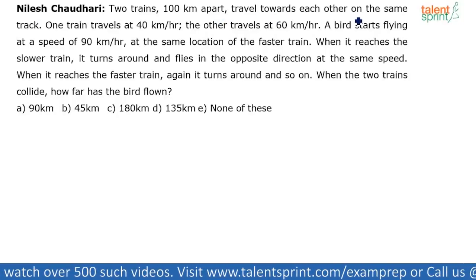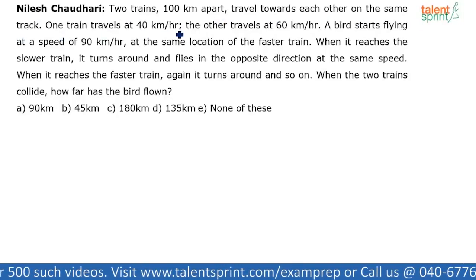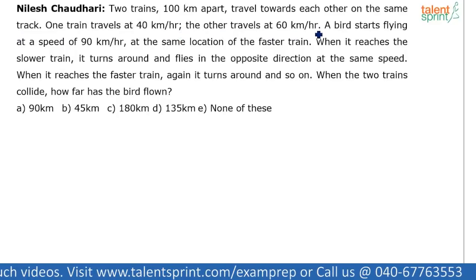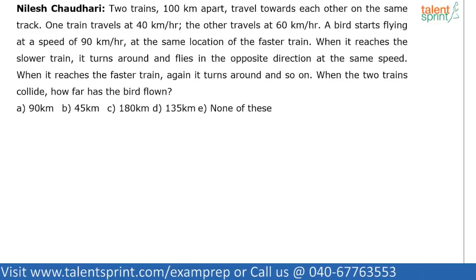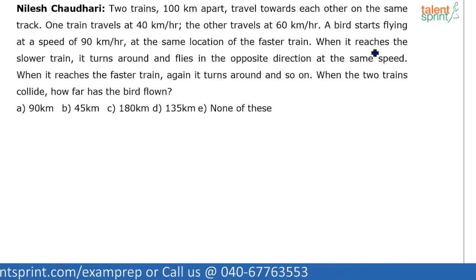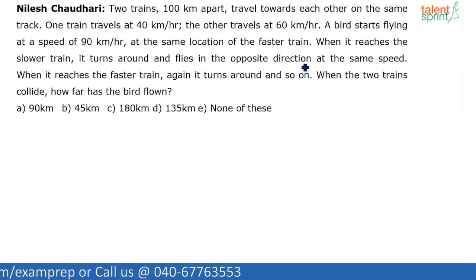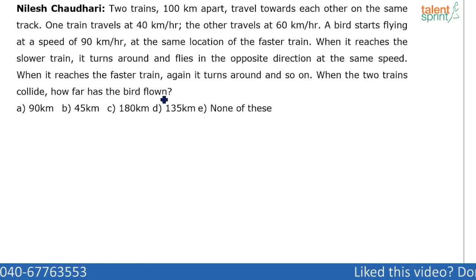Two trains 100 kilometers apart travel towards each other on the same track. One train travels at 40 kilometers per hour, the other at 60 kilometers per hour. A bird starts flying at 90 kilometers per hour from the location of the faster train. When it reaches the slower train, it turns around and flies back at the same speed, and so on. When the two trains collide, how far has the bird flown?